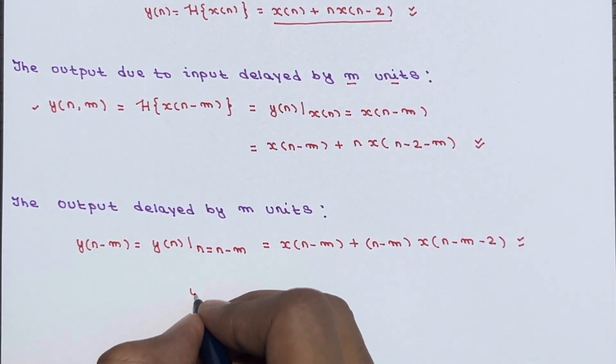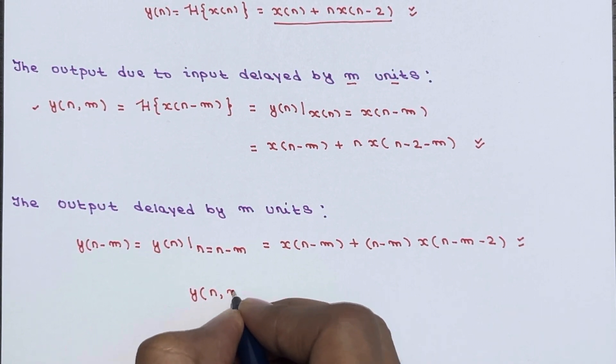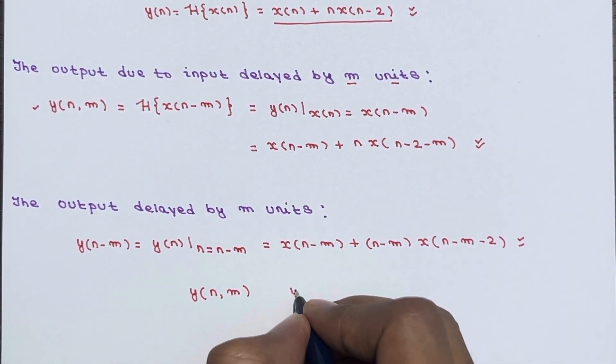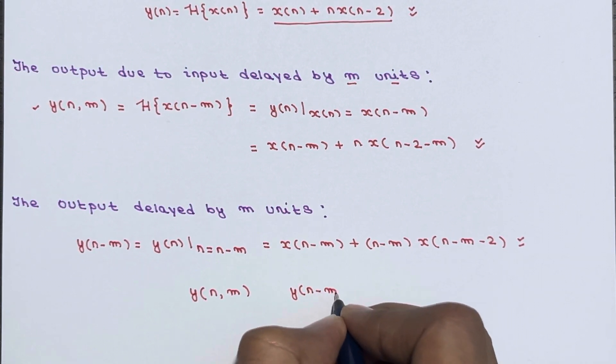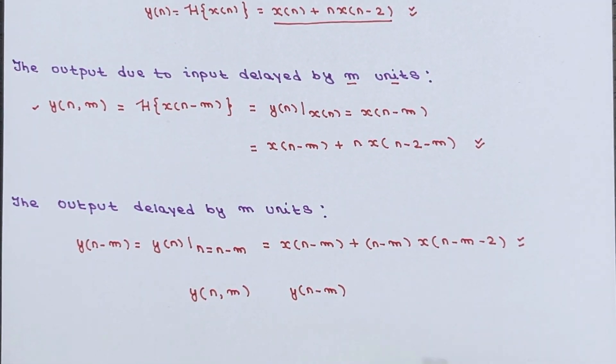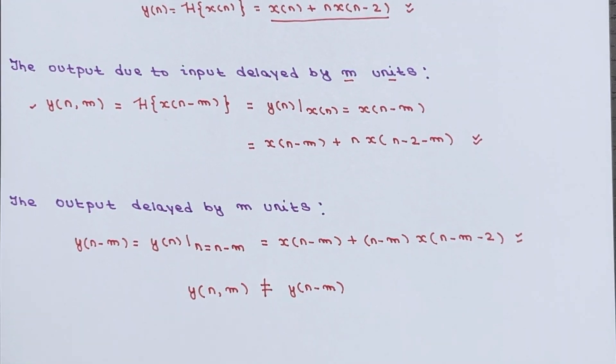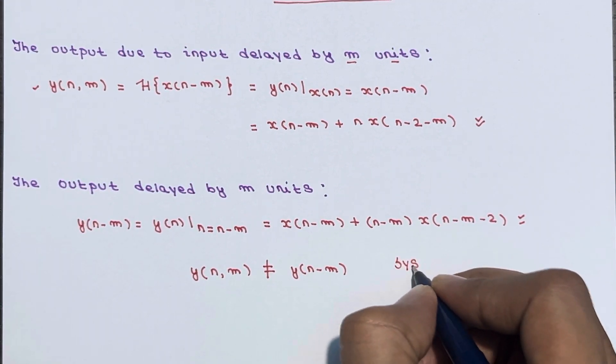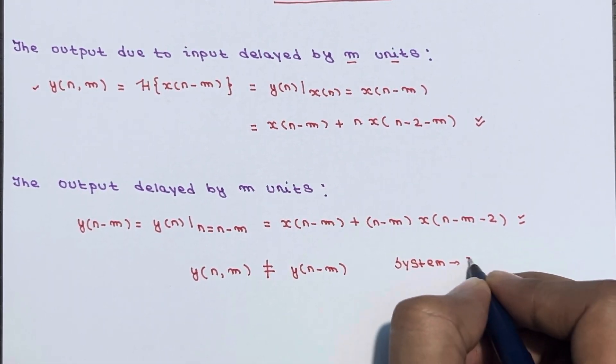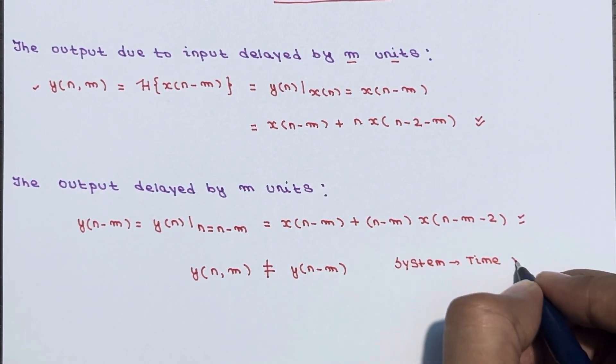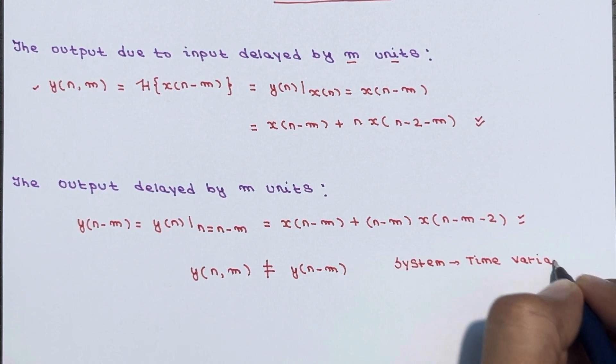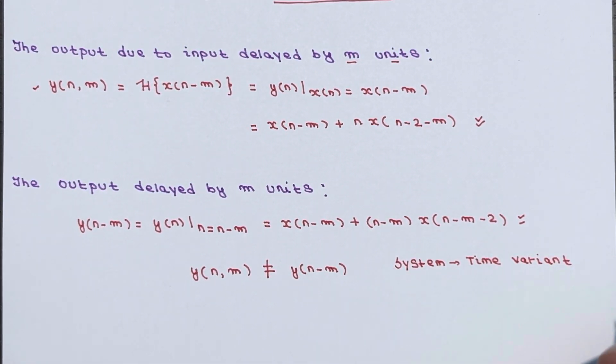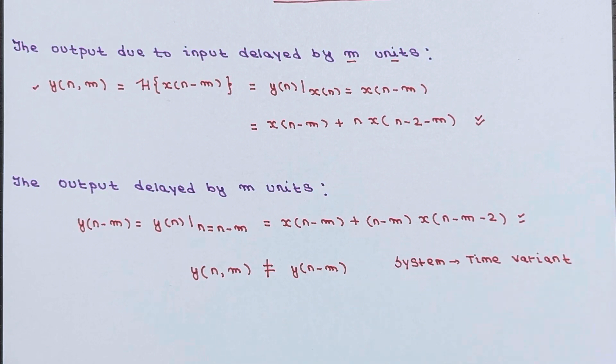So when you compare y(n,m) with y(n-m), are these equal? No, these are not equal. So if these are not equal, it means our system is a time variant system. So basically, if the delayed output is not equal to the output due to delayed input, then we can say that the system is time variant.